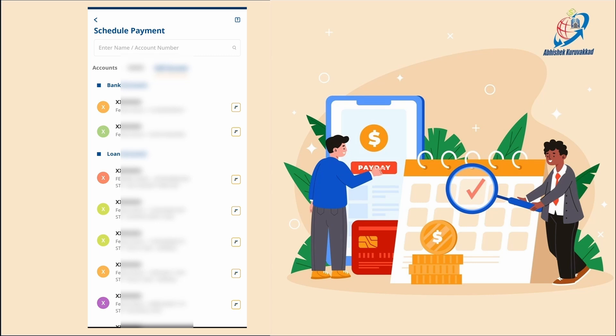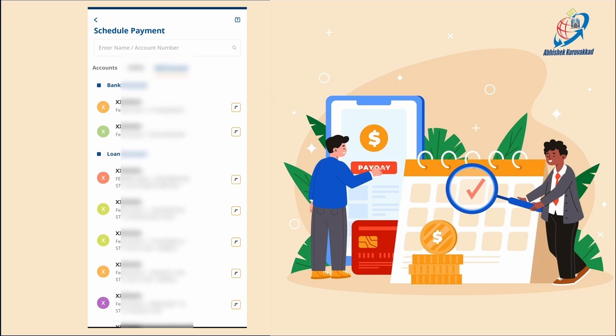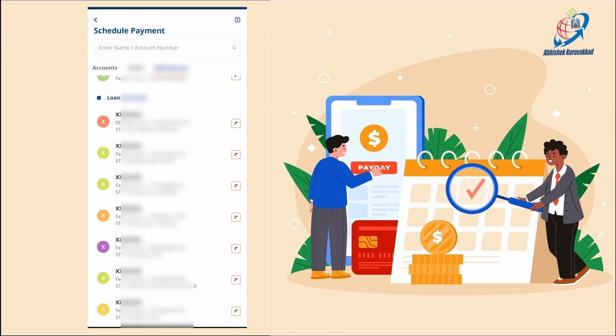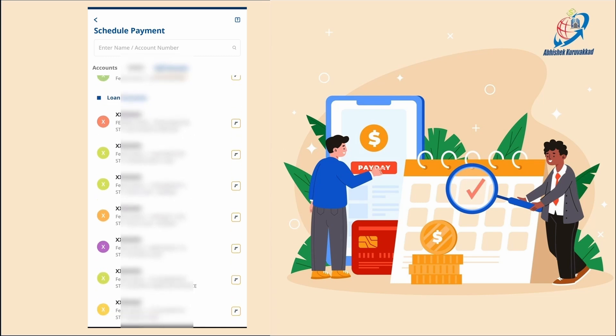Once you click on the account, you will be able to pay to any account. The loan account is already in EMI and I have a gold loan account. I will select a transfer to the gold loan account for a month. I will select the gold loan account.